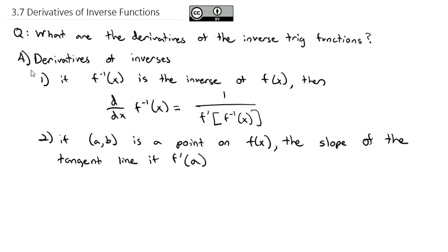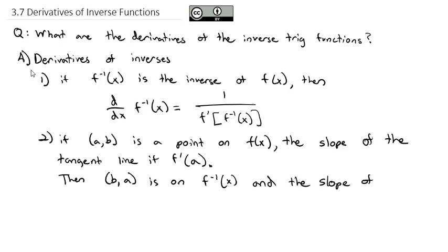We stick that x-coordinate into the derivative — that's just our basic definition of the slope of a tangent line. So if a comma b is a point on f of x, then b comma a — switching the x and y coordinates — is on f inverse of x, and the slope of the tangent line turns out to be just the reciprocal of the slope of the standard function. The slope of the inverse is 1 over f prime of a.